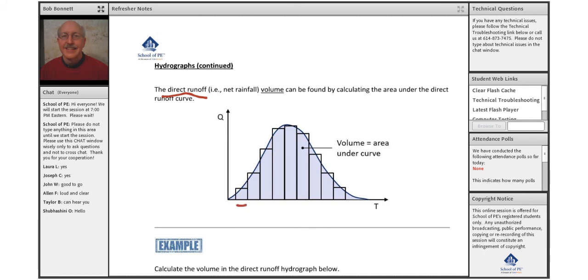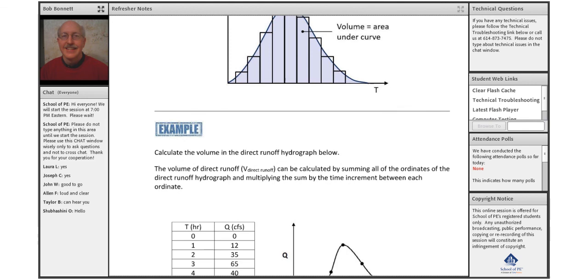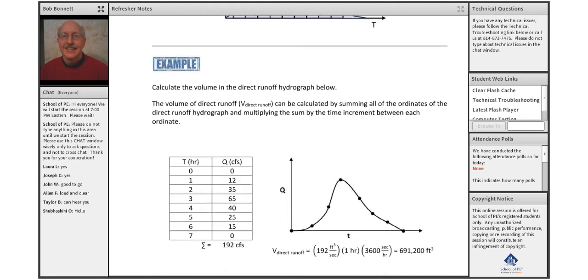To do that, we look at the time increments of which the data was gathered, and then we have the plot points for cubic feet per second that plot up the hydrograph shape. Those are histograms that you could sum together, or we could use the method explained in this example at the bottom of page 67: calculate the volume in the direct runoff hydrograph below.